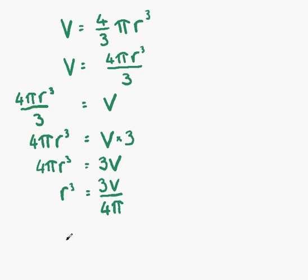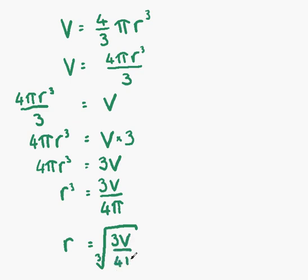We want just R on the left-hand side. In order to change R cubed to R, we have to take the cube root. If we take the cube root on the left-hand side, we must take the cube root on the right-hand side also. So R equals the cube root of 3V over 4 pi. R is now the subject of the formula, so this is our final answer.